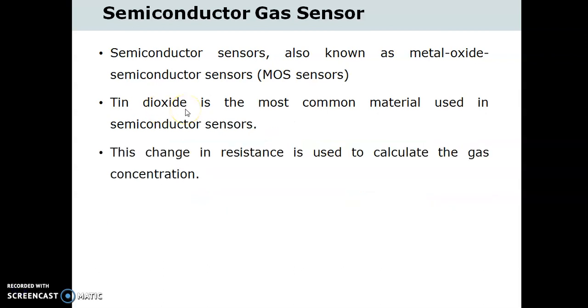Tin dioxide is the most common material used in the semiconductor sensor, and the electrical resistance in the sensor is decreased when it comes in contact with the monitored gas. This change in resistance is used to calculate the gas concentration. The resistance of tin dioxide is typically around 50 kOhm in air but can drop to around 3.5 kOhm in the presence of 1% of methane.